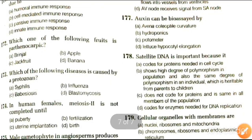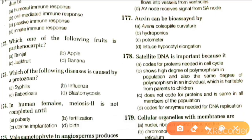Next question: satellite DNA is important because it codes for proteins needed in cell cycle; shows high degree of polymorphism in the population and the same degree in individuals which is passed from parent to children; does not code for proteins and is same in all members of the population; or codes for enzymes needed for DNA replication. The answer is B.